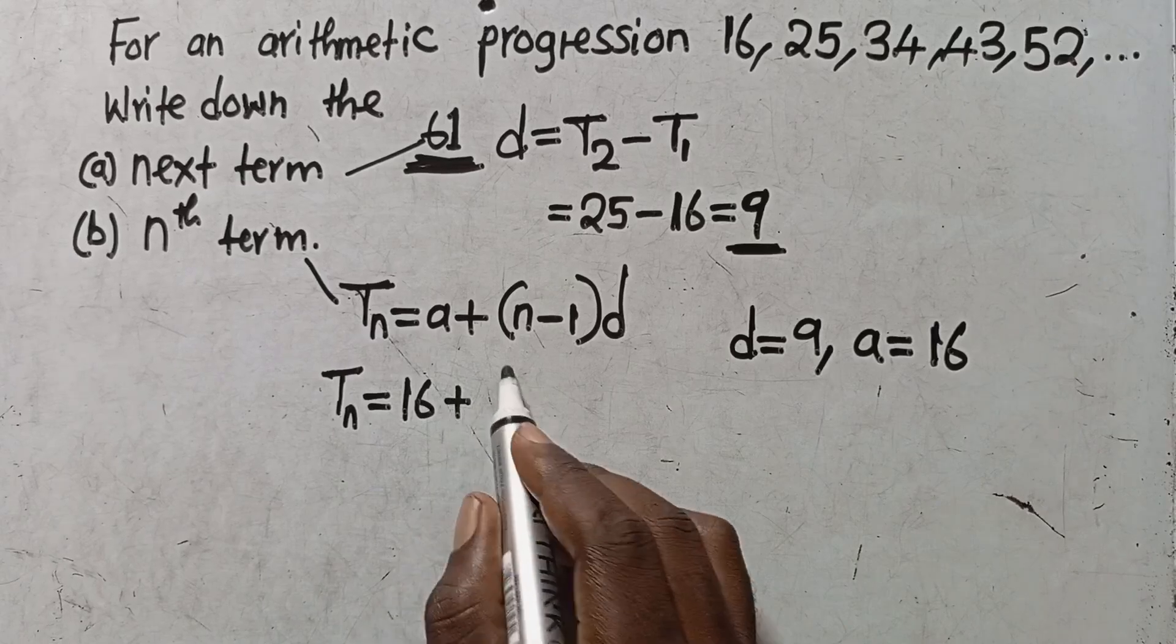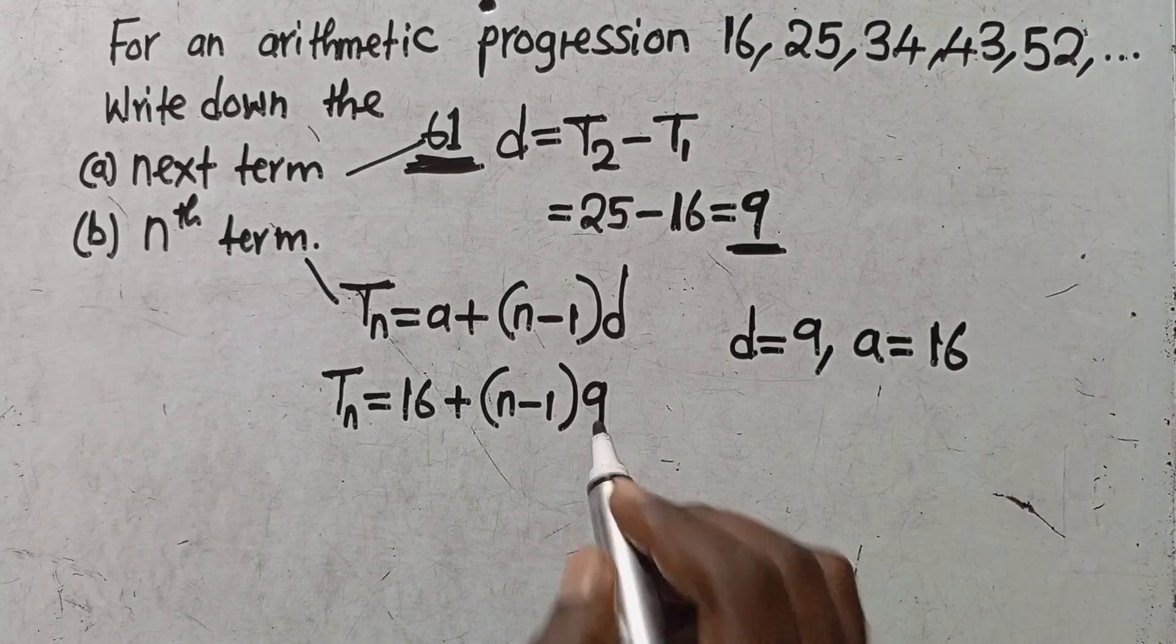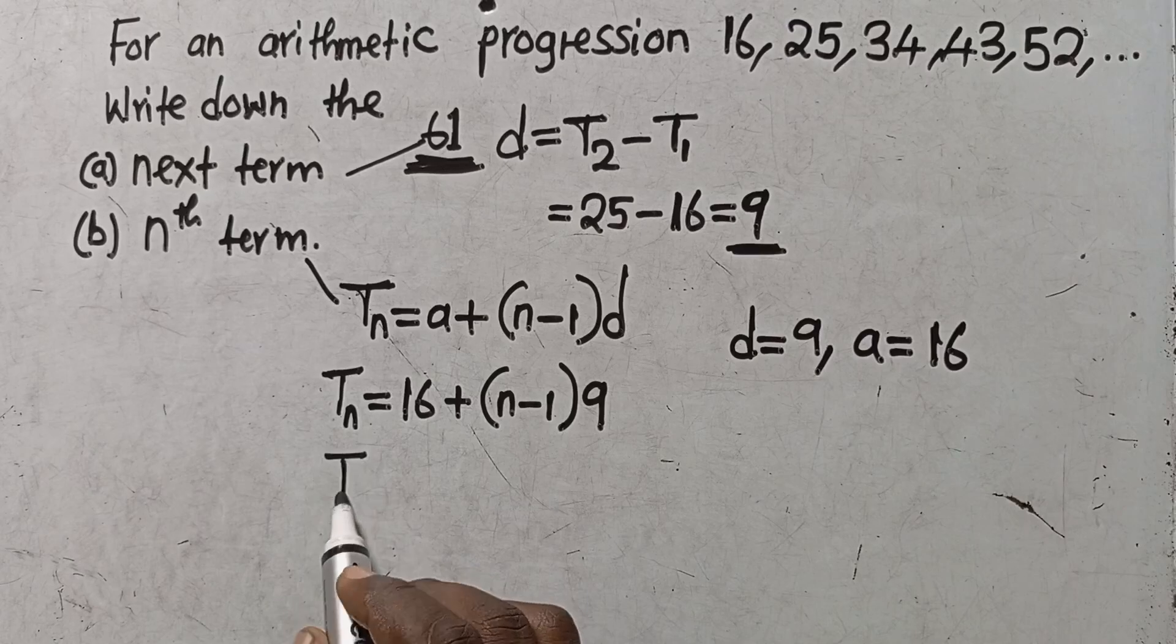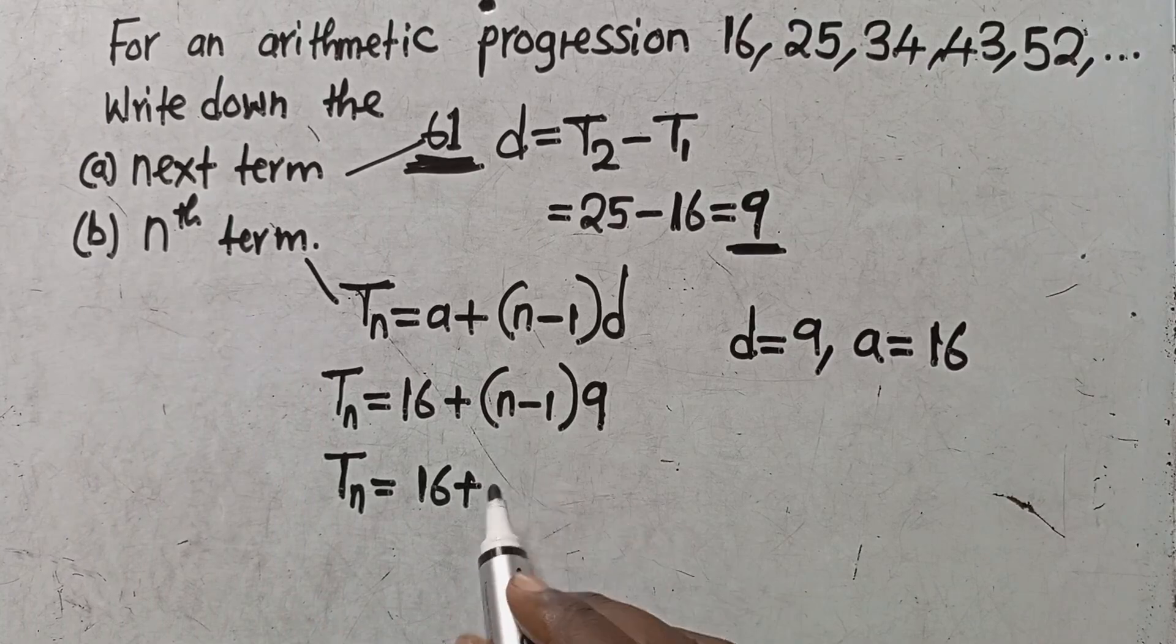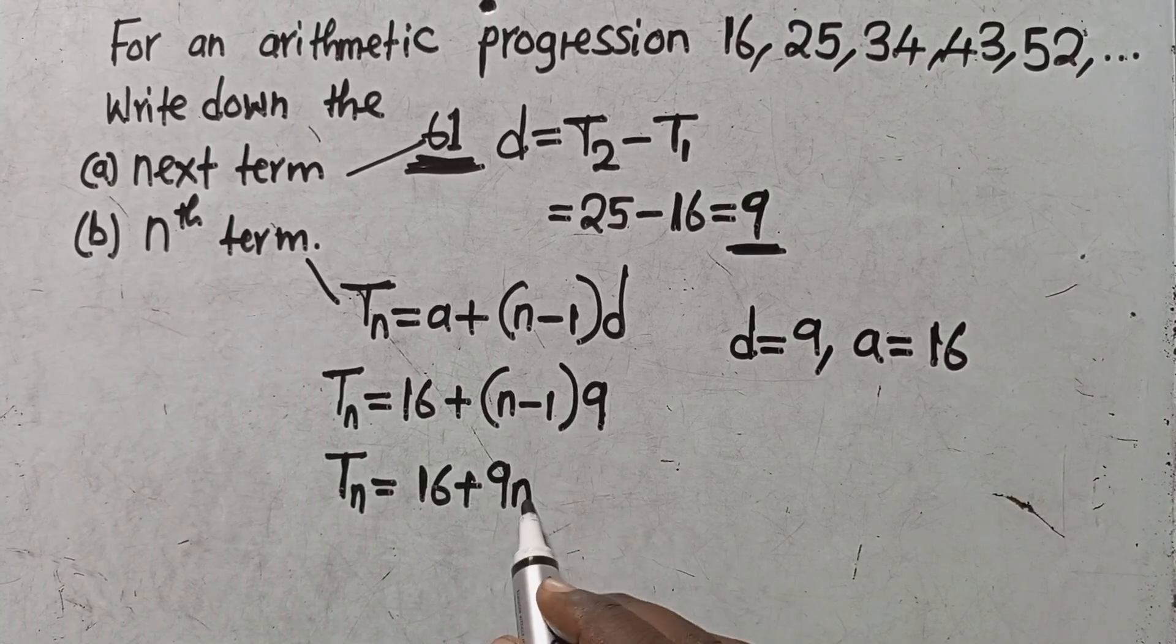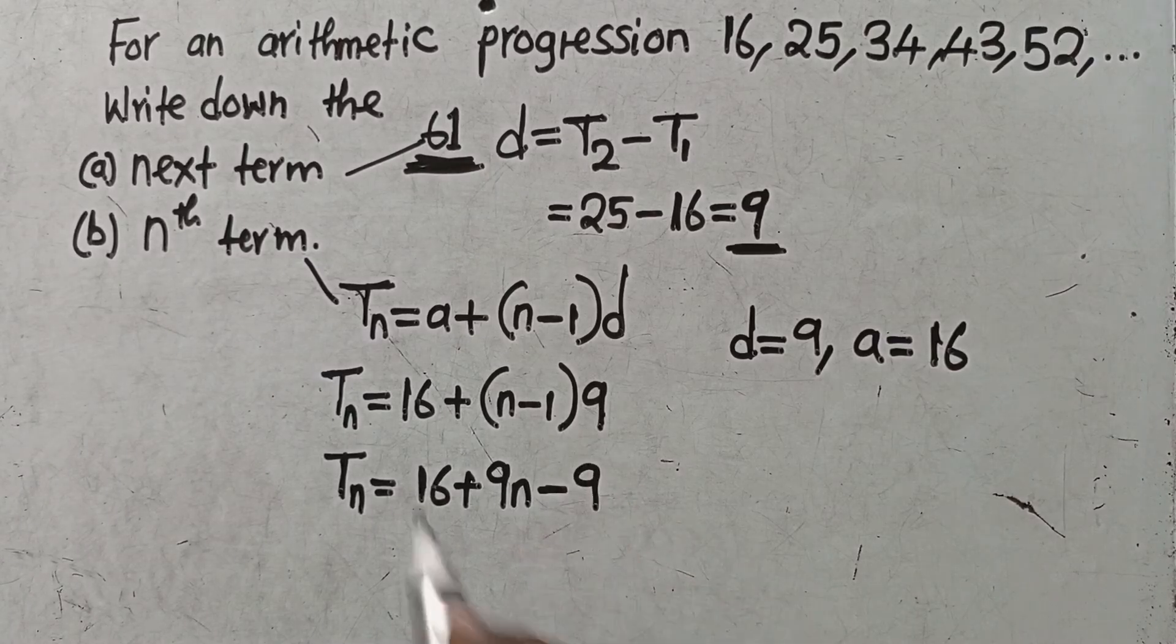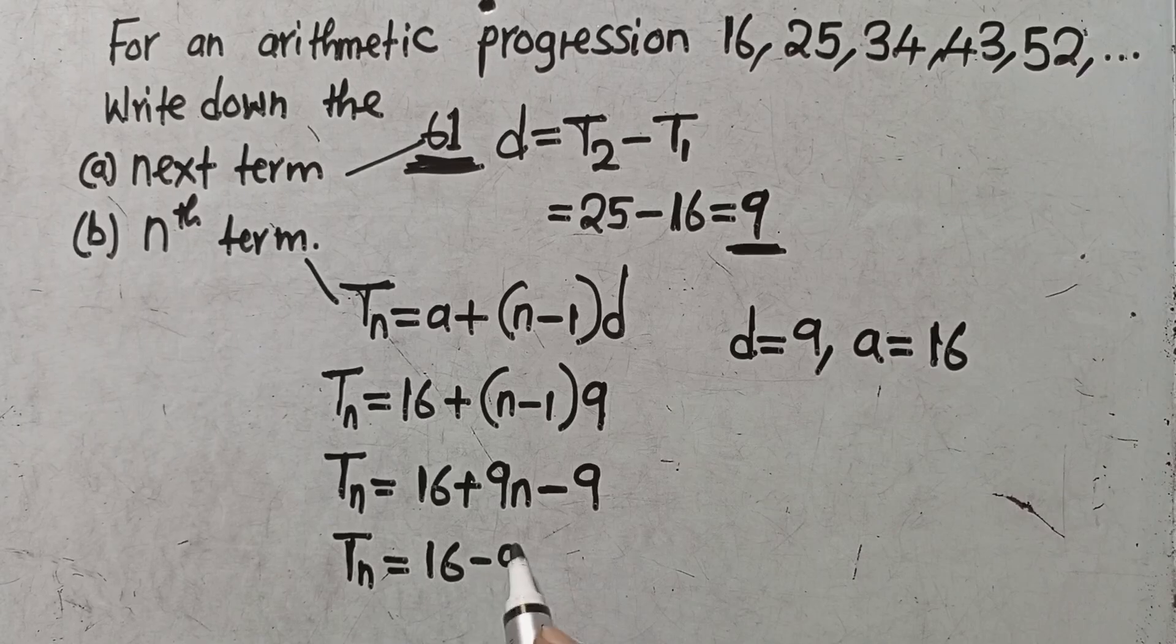You multiply this with everything in the brackets. So this is equal to 16 plus 9 times n, that is 9n, minus 9 times 1, that is 9. You group the like terms, so this equals 16 minus 9, which is 7, plus 9n.